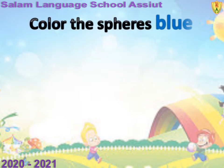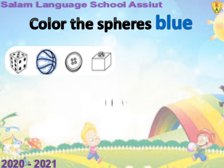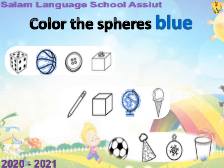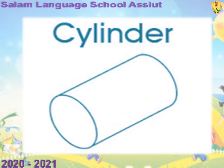Color the spheres blue. نشوف أول مجموعة اشكال — عندنا انهي شكل فيهم شكل sphere؟ Bravo عليكم — basketball, لانها شكل كروي. نشوف الاشكال البعد كده — عندنا globe, هي sphere لانها برضو شكل كروي. اخر مجموعة اشكال — bravo عليكم يا اصحابي — football هي sphere.